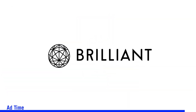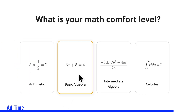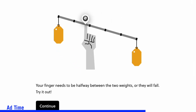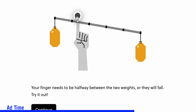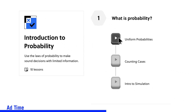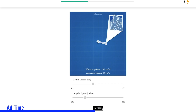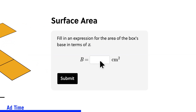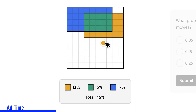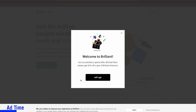Brilliant is a website whose visual, hands-on approach can be your key to understanding the concepts behind today's technology. You can explore a variety of topics and skill levels, mastering whole subjects in as little as 15 minutes a day, anywhere on your phone, tablet, or computer. There's a 30-day free trial, and the first 200 people get 20% off their annual subscription at brilliant.org.